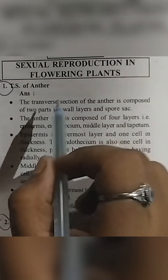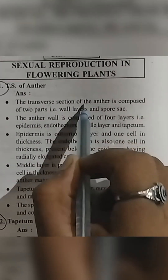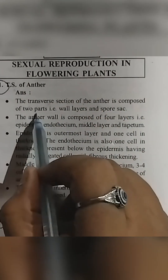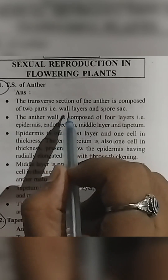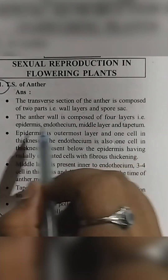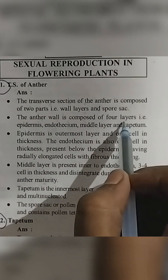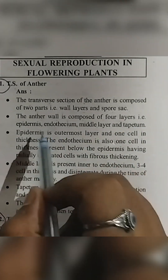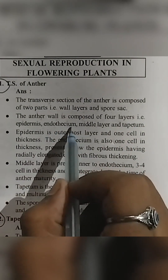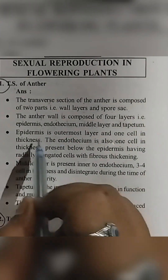The transverse section of the anther is composed of two parts: the wall layers and the spore sac. The anther wall is composed of four layers: epidermis, endothesium, middle layer, and tapetum.